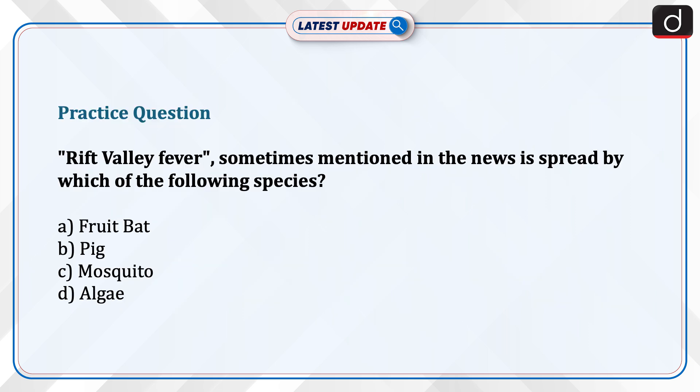Now is the time for a practice question. Rift Valley Fever, sometimes mentioned in the news, is spread by which of the following species? Fruit Bat, Pig, Mosquito, or Algae? Send the answer to this question in the comment section. Stay tuned for more such updates.